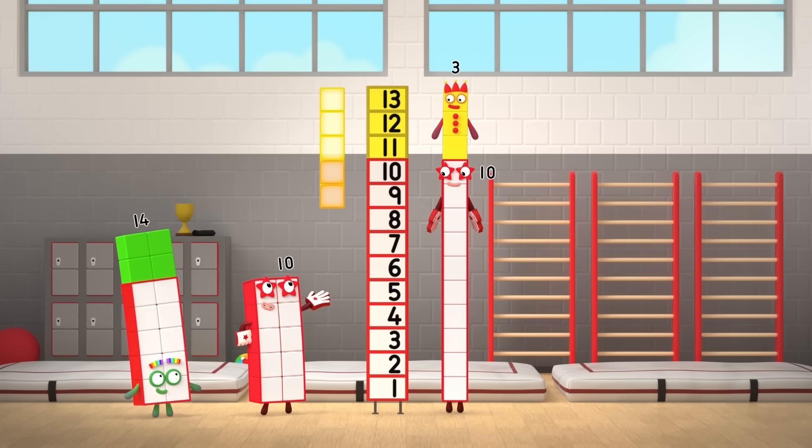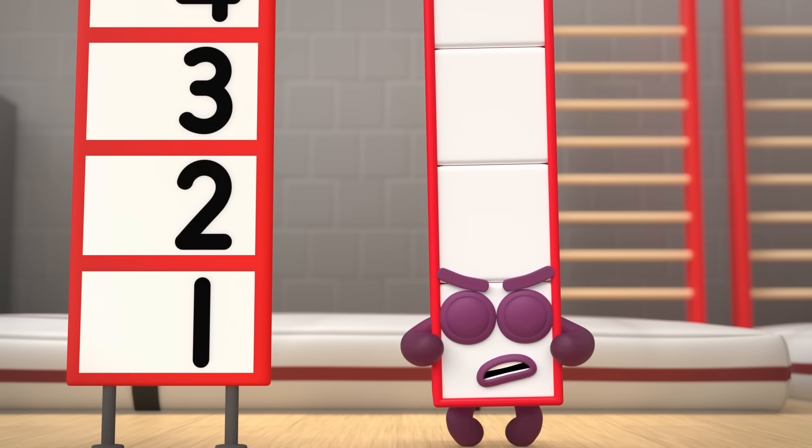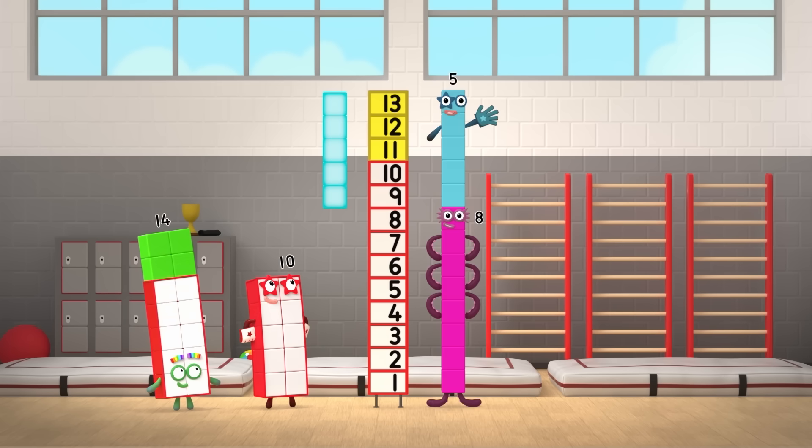Excellent. Now take the two away. Ten minus two is eight. So, thirteen minus five equals eight.